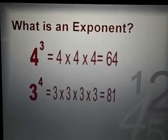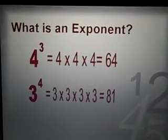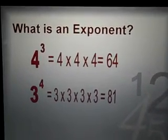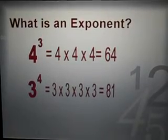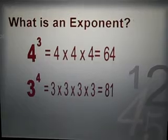In this next example, 3 to the fourth power, or 3 to the power of 4, or simply 3 to the fourth, is 3 times 3 times 3 times 3, which equals 81.